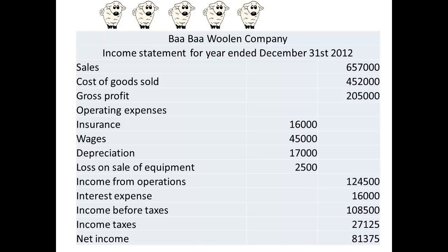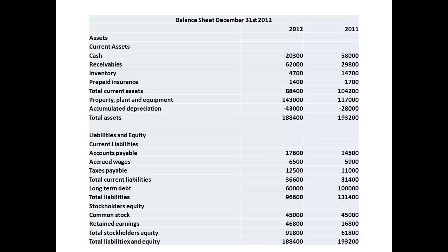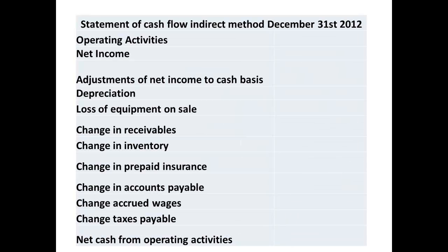The information that we need to prepare the cash flow statement comes from financial statements. The income statement is one source of information. We shall also need the balance sheets for the last two years, because we are going to use information calculated using the starting and ending balances in a number of accounts. The difference in preparation of a cash flow statement by the indirect method comes about through a different way of determining the net cash inflow or outflow from operating activities.